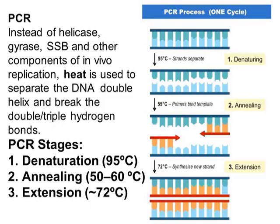The second step is annealing. In the annealing step, the primers — which are complementary to the gene or fragment I want to amplify — are added and bind to the single-stranded DNA template. This is the binding or annealing of the primers to the complementary sequence of the DNA template.